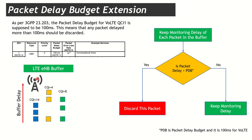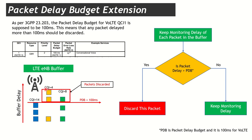Here is an LTE eNB buffer example with three UEs: a blue UE in good radio conditions (CQI 14), an orange UE in bad conditions (CQI 4), and a yellow-green UE in medium conditions (CQI 8). The buffer delay is higher for the CQI 4 UE due to more retransmissions. With a packet delay budget of 100 milliseconds, the eNB will discard these three packets that are already beyond the 100ms limit.